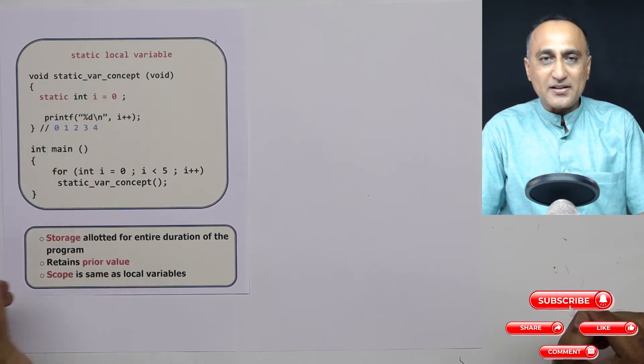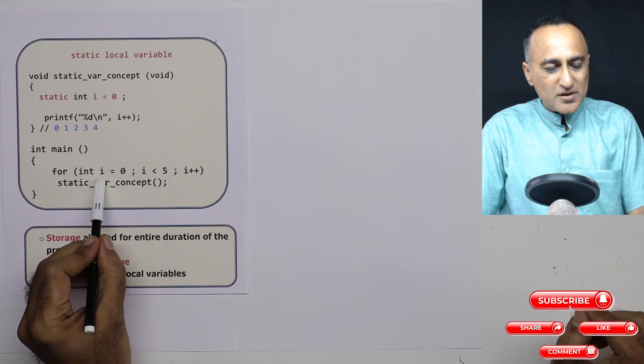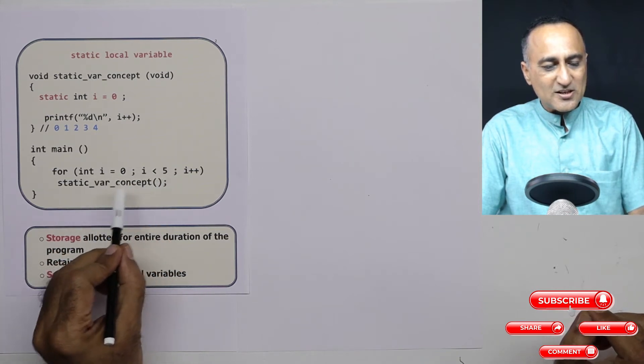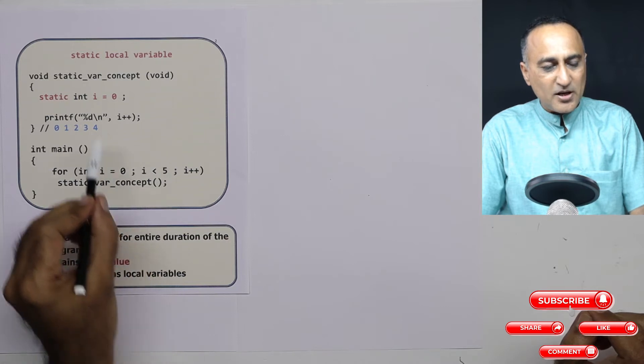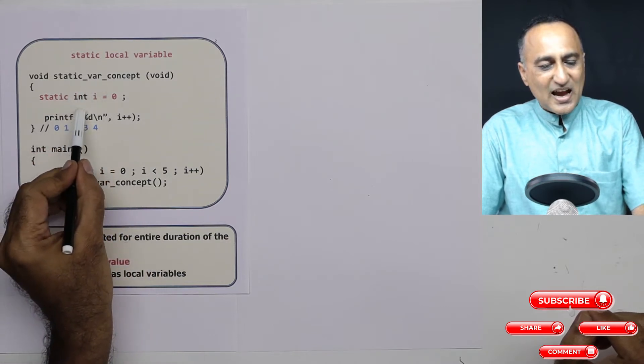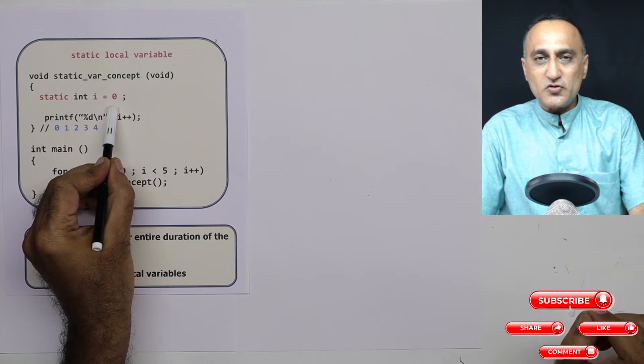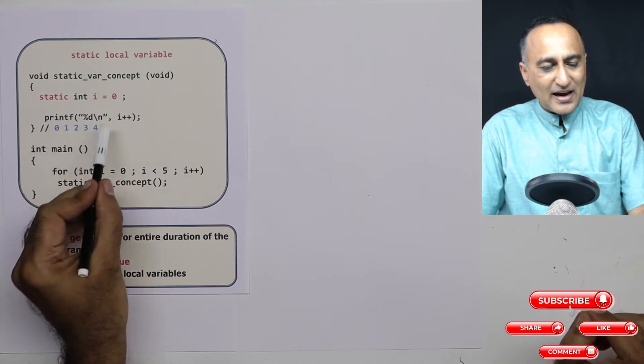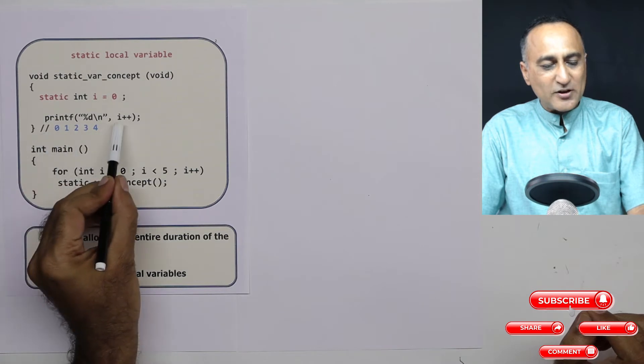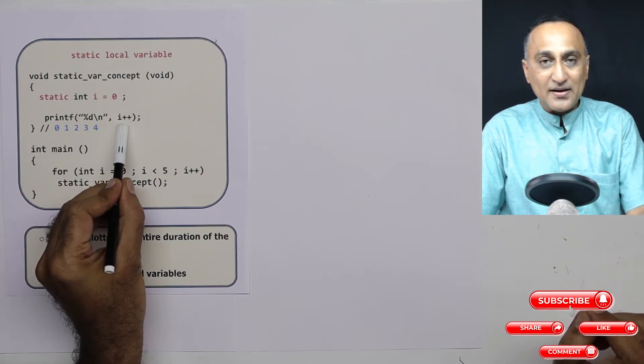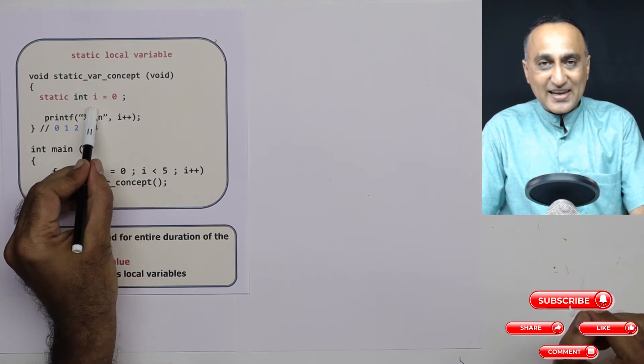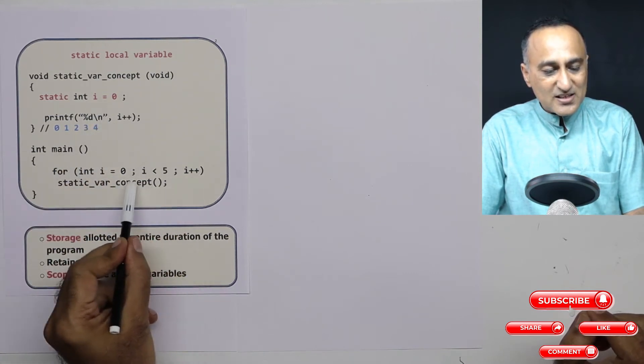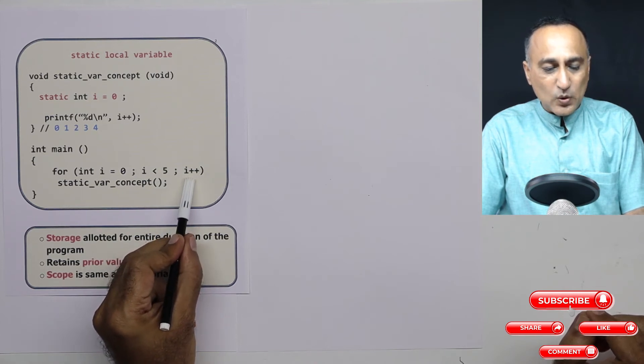Now what this word static int i does is you will know about the static keyword once we call this function and try to get the output. So what I do is i is zero, zero is less than five. So I am calling this function static_var_concept. When I call this function, i is going to be initialized to zero. Then I am printing the value of i, i is going to print as zero. After printing, i value becomes one. I am talking about this i here not this i, i becomes one. Now I come back here, here this i has increased by one, it becomes one. One is less than five. Again I call this flow.